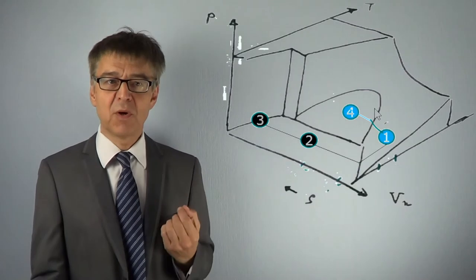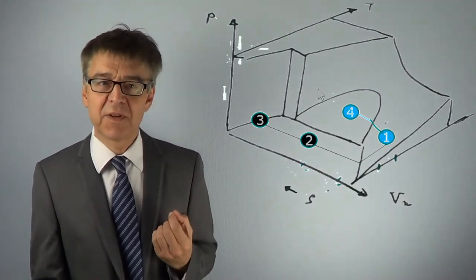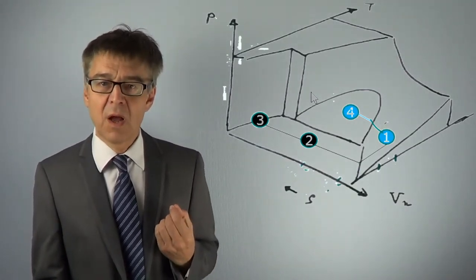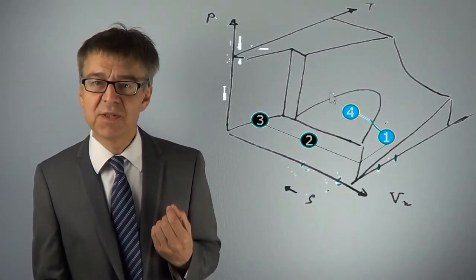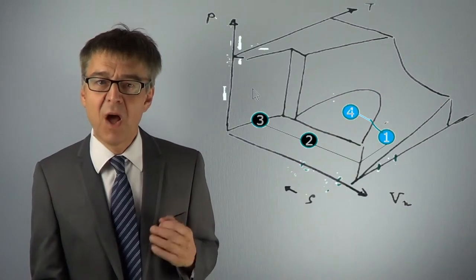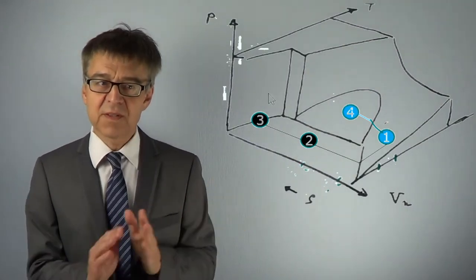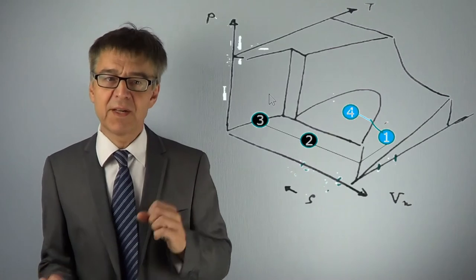High temperatures and high molar volumes correspond to a homogeneous gas phase. At medium temperatures and molar volumes, liquid phase is present. These are the homogeneous regions of the phase diagram.